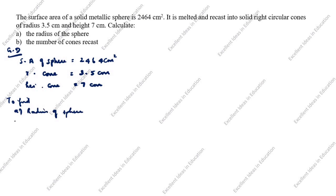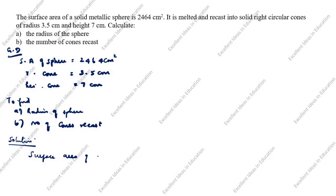Second, we need to find the number of cones recast. Solution: surface area of sphere is given as 2464. We need to find the radius. The formula for surface area of a sphere is 4πr² = 2464.